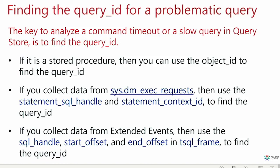If you collect data from sys.dm_exec_requests and sys.dm_exec_sessions continuously, whenever there's a problem you can go back in time, filter on login name or timestamp, take those two columns, and find the query ID in Query Store. Another method is collecting from extended events — you'd have the SQL handle and offset. This is the most powerful method for finding queries when you don't know them upfront.